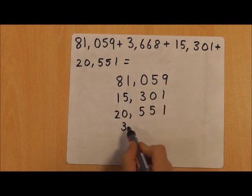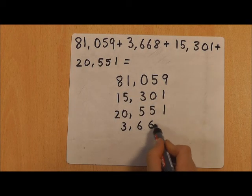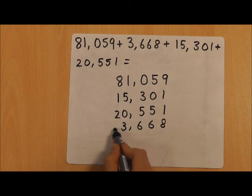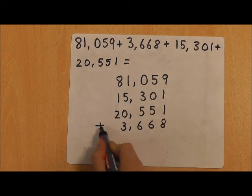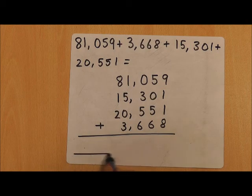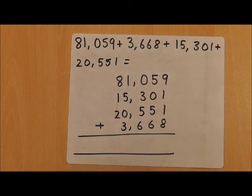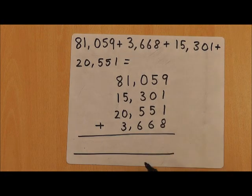You'll notice that this number doesn't have a value in the ten thousands column. I'm now going to use column addition to add this calculation together. So 9 add 1 is 10, 10 add 1 is 11, add 8 is 19.